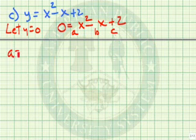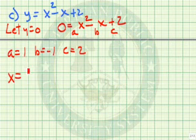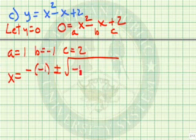a has a value of 1, b has a value of negative 1, c has a value of 2.